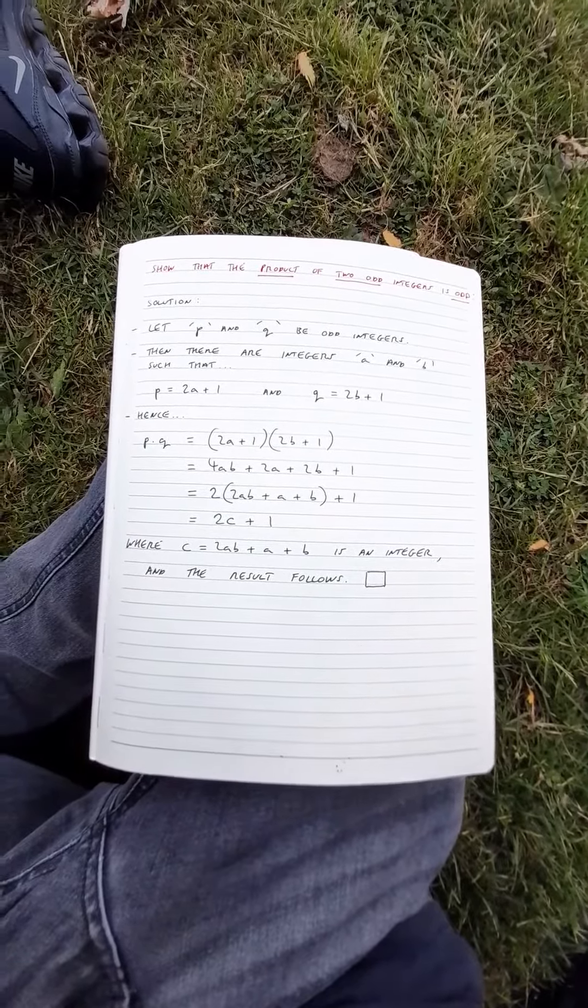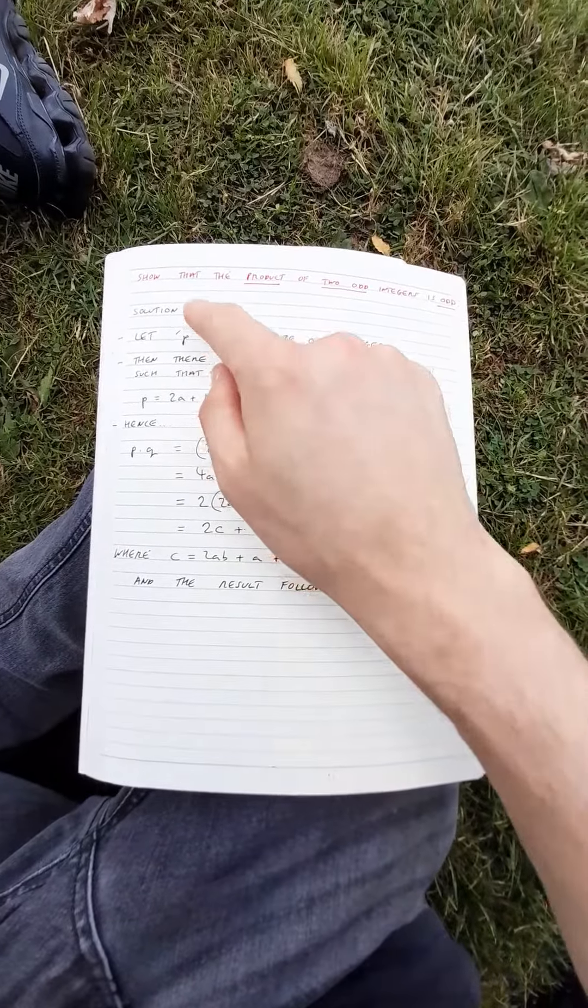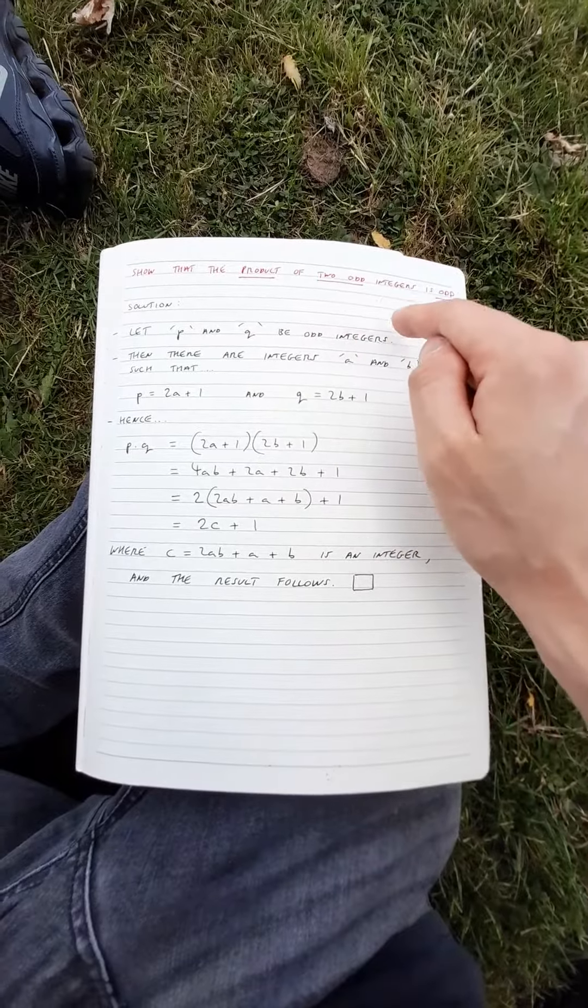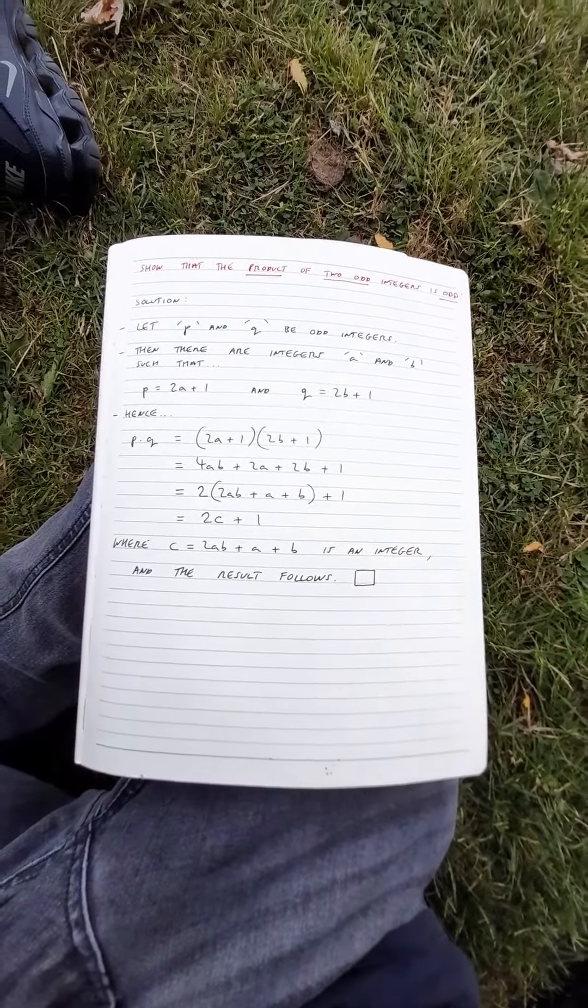Hi! In this video I'm going to demonstrate how to show that the product of two odd integers is odd. So what's the solution?